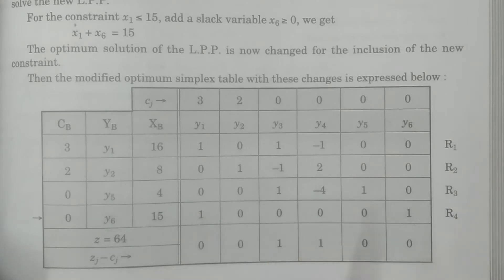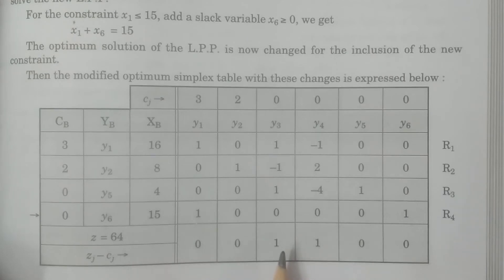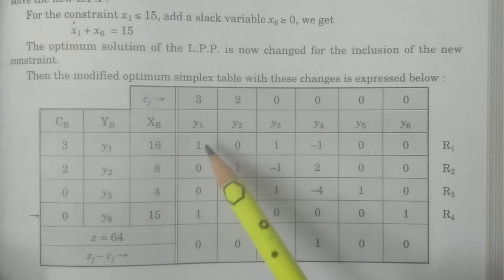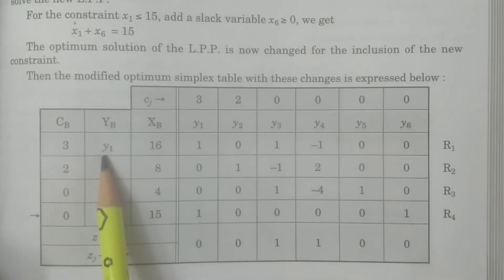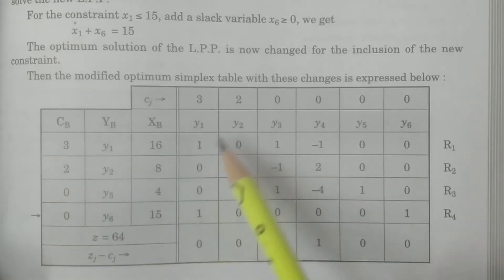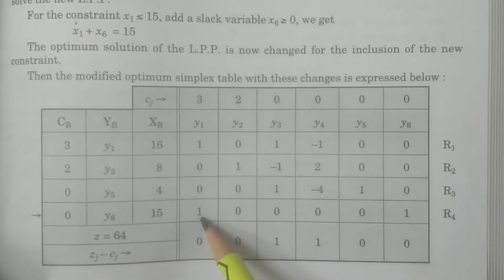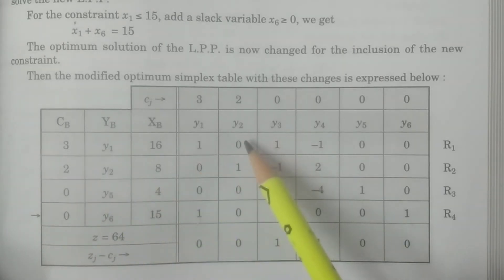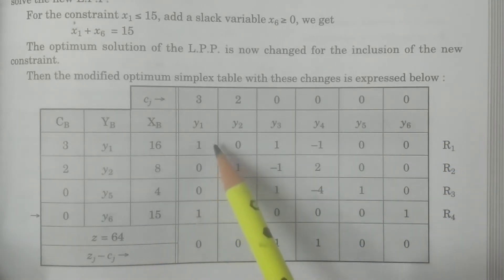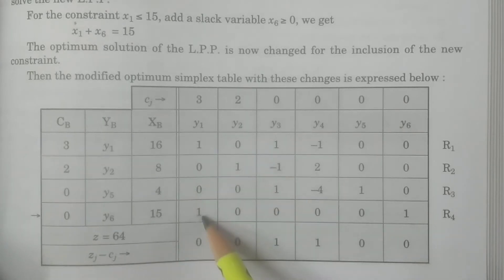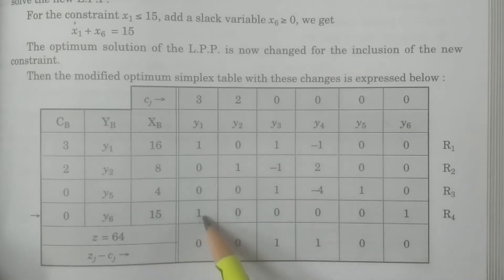Before applying the dual simplex procedure, you have to use common sense. Observe that y1 is a basis vector, so it must be 1, 0, 0, 0. Similarly y2 is 0, 1, 0, 0 and y5 is 0, 0, 1, 0. But in the new row for y6, y1 appears as 1 instead of 0 — you must convert this to 0 using the relevant row operation R4 = R4 − R1.